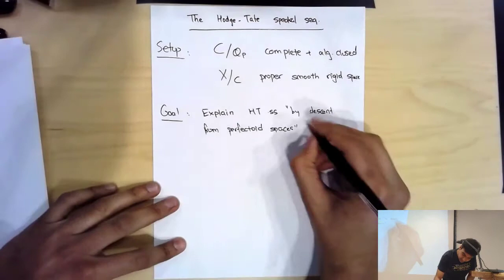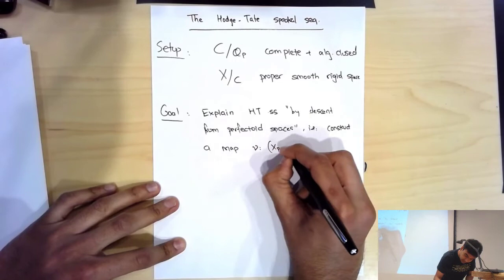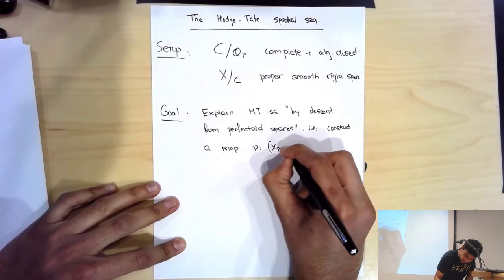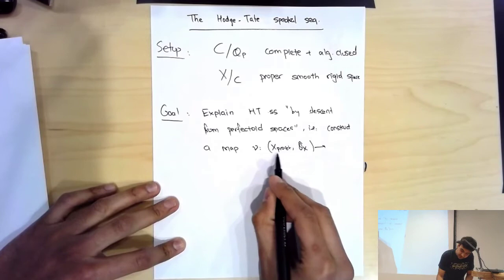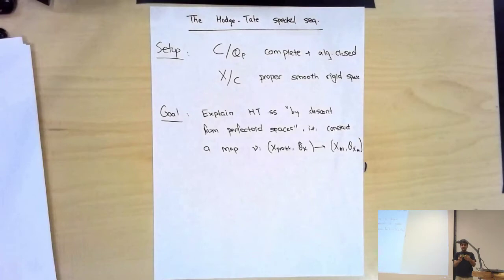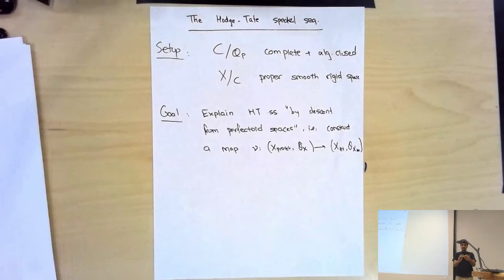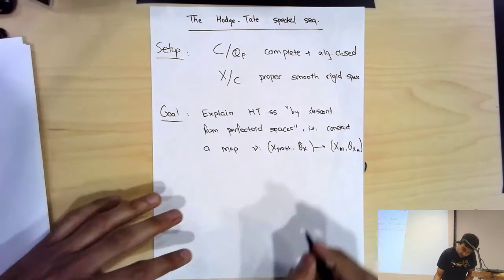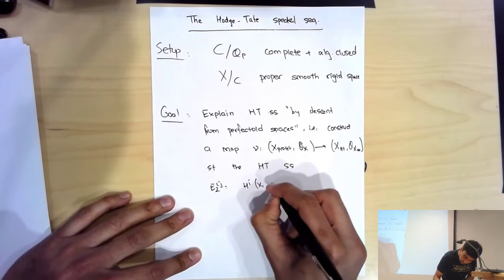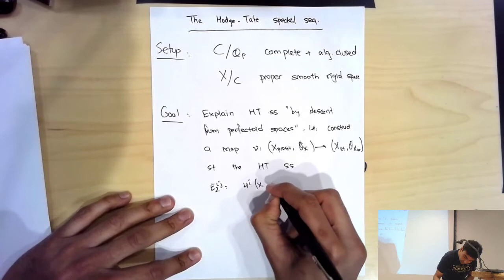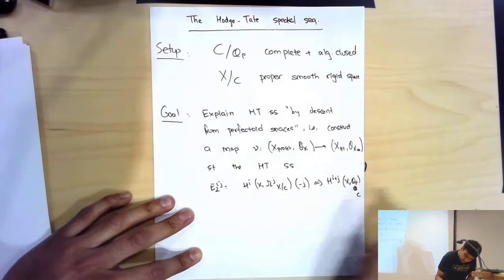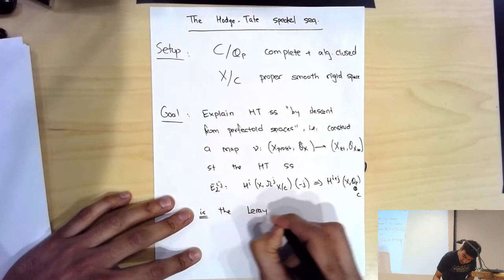We're going to construct a map ν — a map of sites. There will be something called the pro-étale site of X with structure sheaf Ô_X, mapping down to the étale site with the usual structure sheaf. The Hodge-Tate spectral sequence is actually just the Leray spectral sequence for this morphism ν. The HTSS looks like H^i(X, Ω^j_{X/C}(−j)) converging to H^{i+j}(X_{Q_p}, Q_p tensored with C), and this is the Leray spectral sequence for ν.